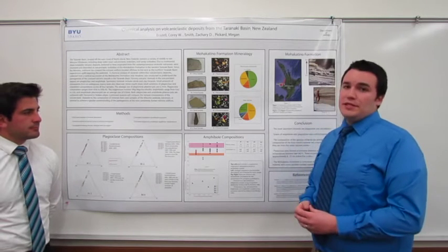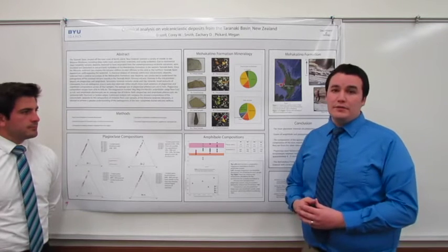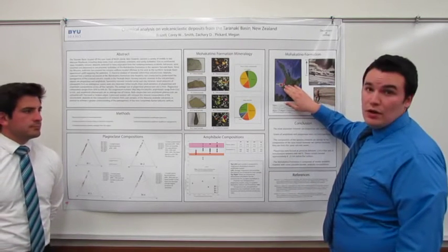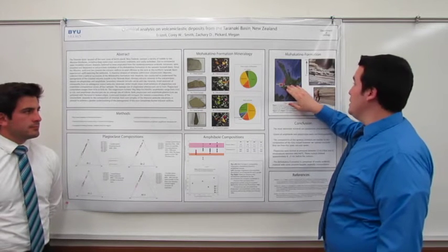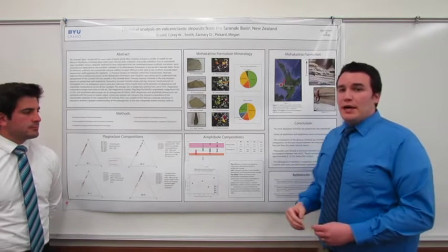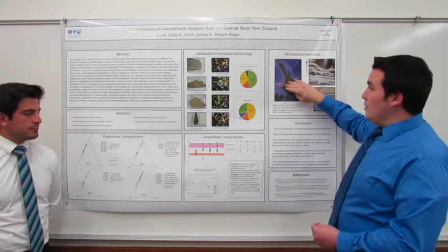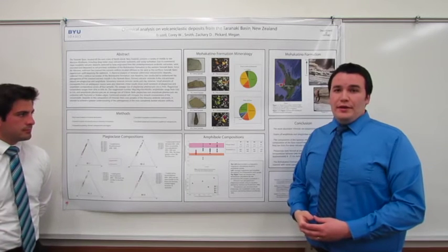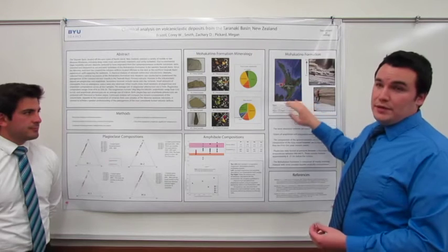The Mohakatino Formation is found within the Taranaki Basin near the North Island of New Zealand. Our sample location is on the west coast along the beach west of Awakino, New Zealand. This area underwent ocean-ocean subduction, which led to Miocene volcanoes being produced within the basin along the west coast.